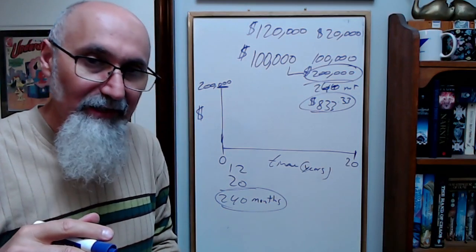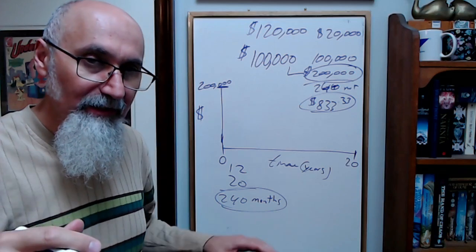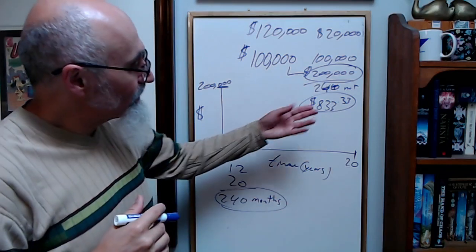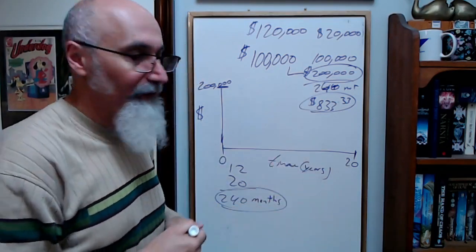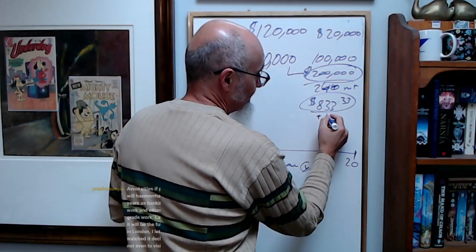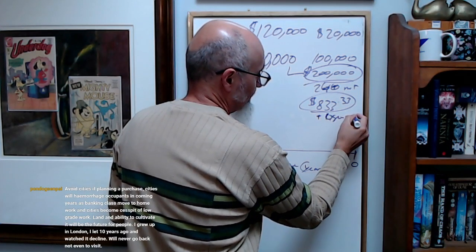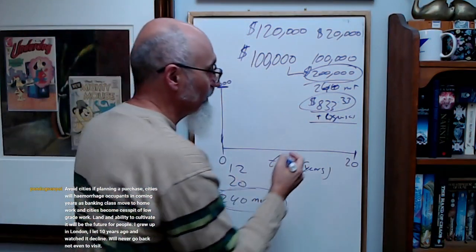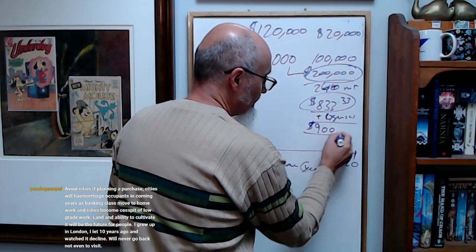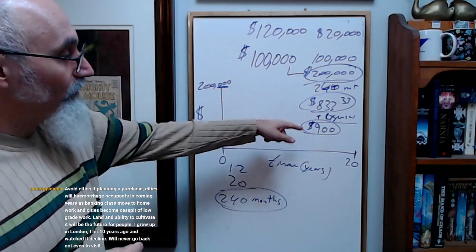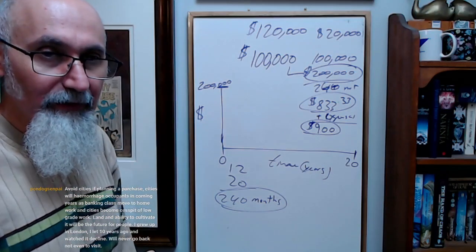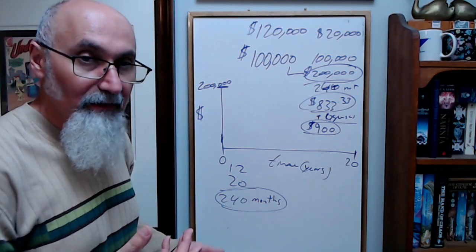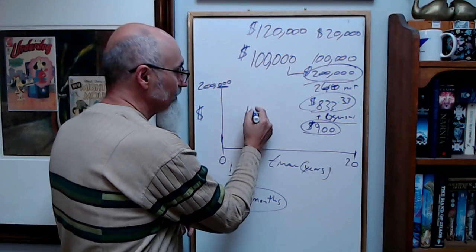This doesn't include taxes, this doesn't include service, this doesn't include water. Nothing. Let's assume, kick this up with taxes and everything. Let's assume plus expenses—cleaning, you get people renting out they destroy the place you got to fix it up again. Let's say it's gonna be nine hundred dollars per month that you're gonna be putting into this apartment for 20 years.